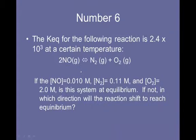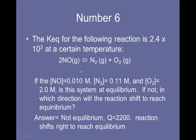Number six. The KEQ for the following reaction is this number at a certain temperature. If the NO concentration is that, and N2 and O2 are those, is the system at equilibrium? This is one like we had before. Plug information in, compare to the known KEQ. And you will find that it's not at equilibrium. In fact, the Q value that you get is about 2200. So the reaction has to shift to the right to reach equilibrium.